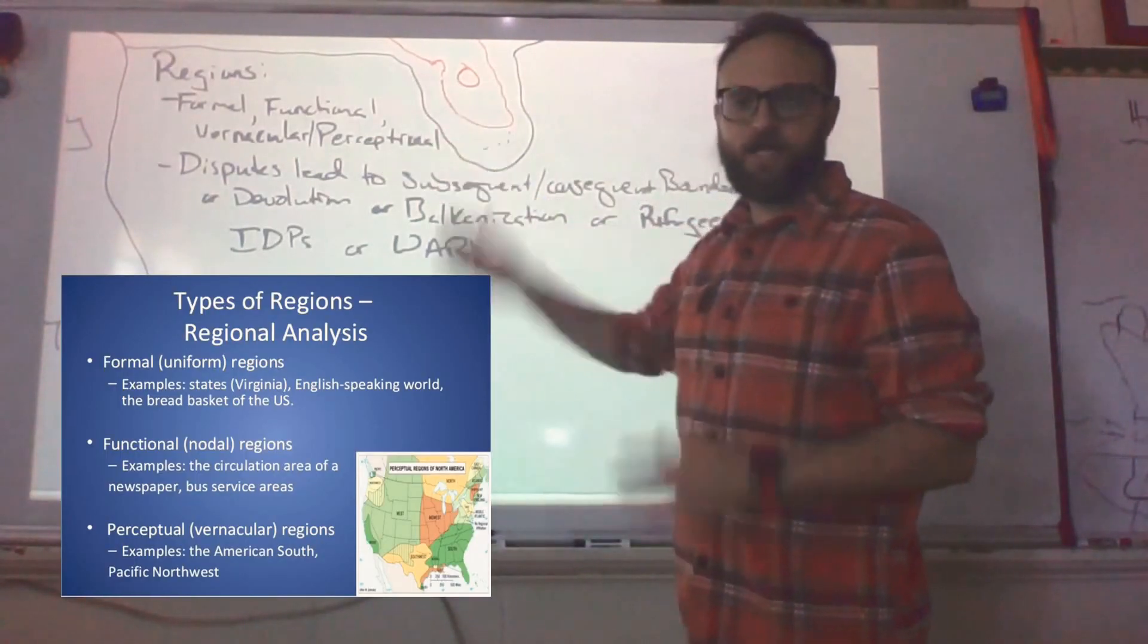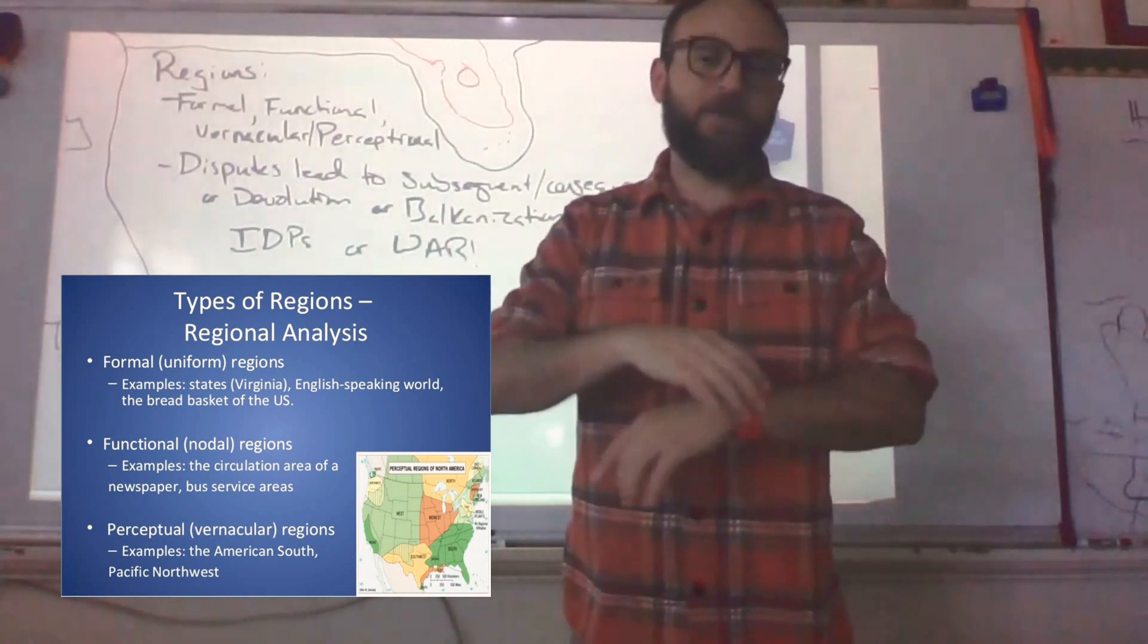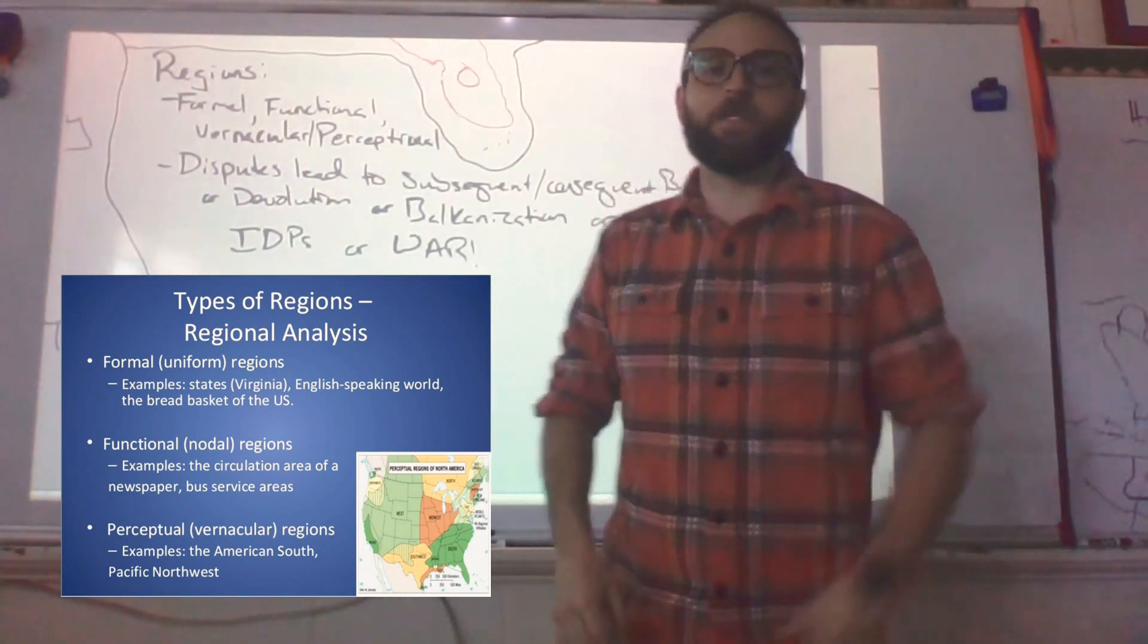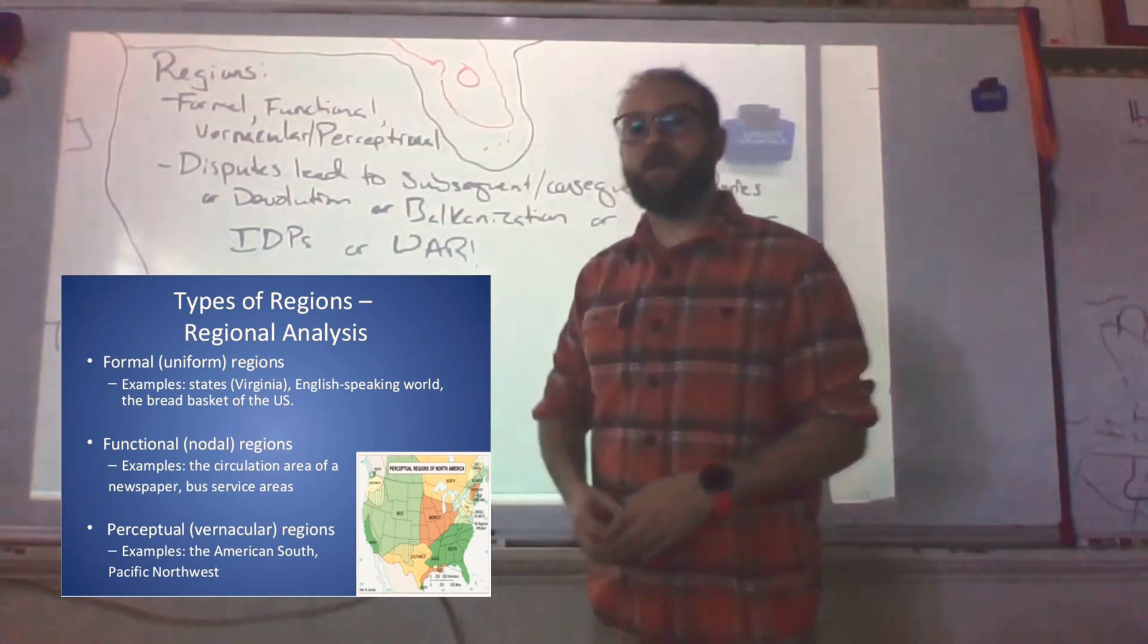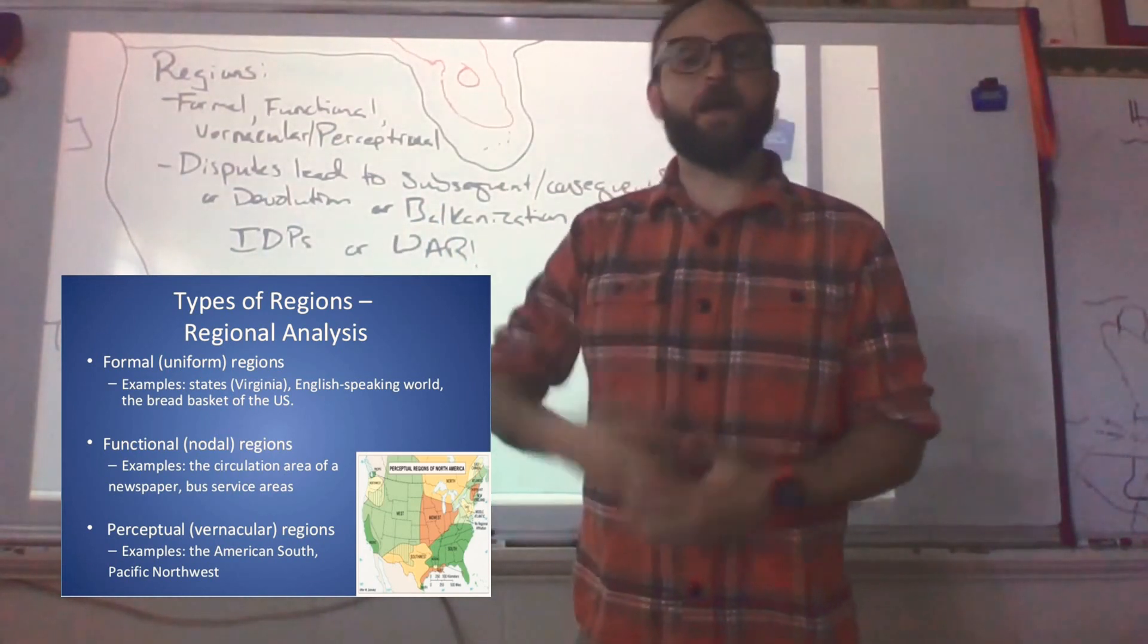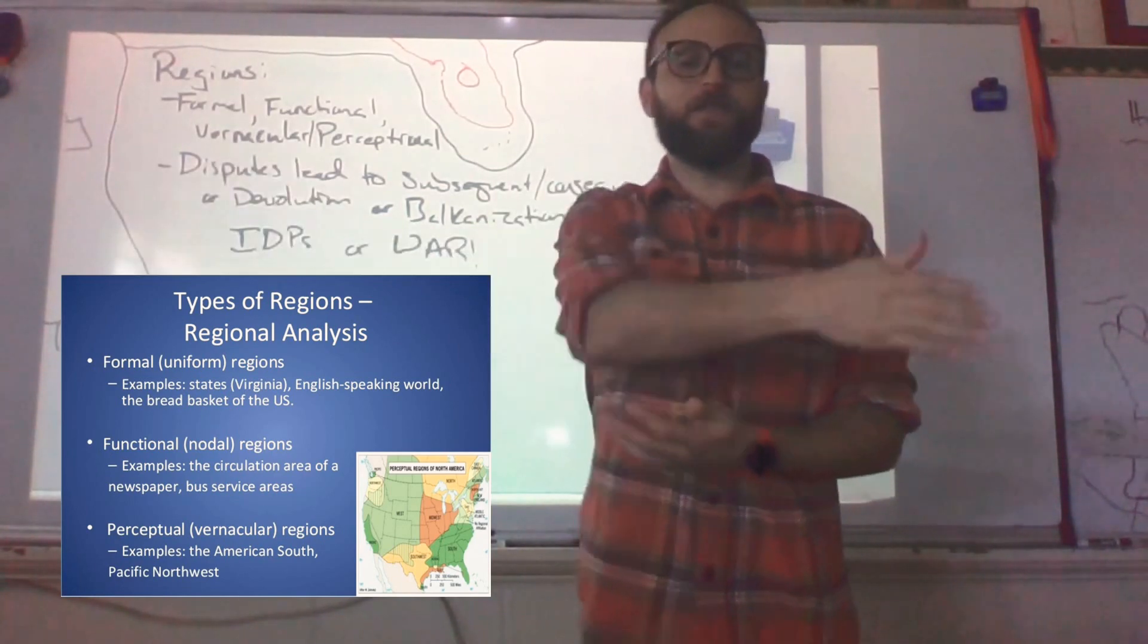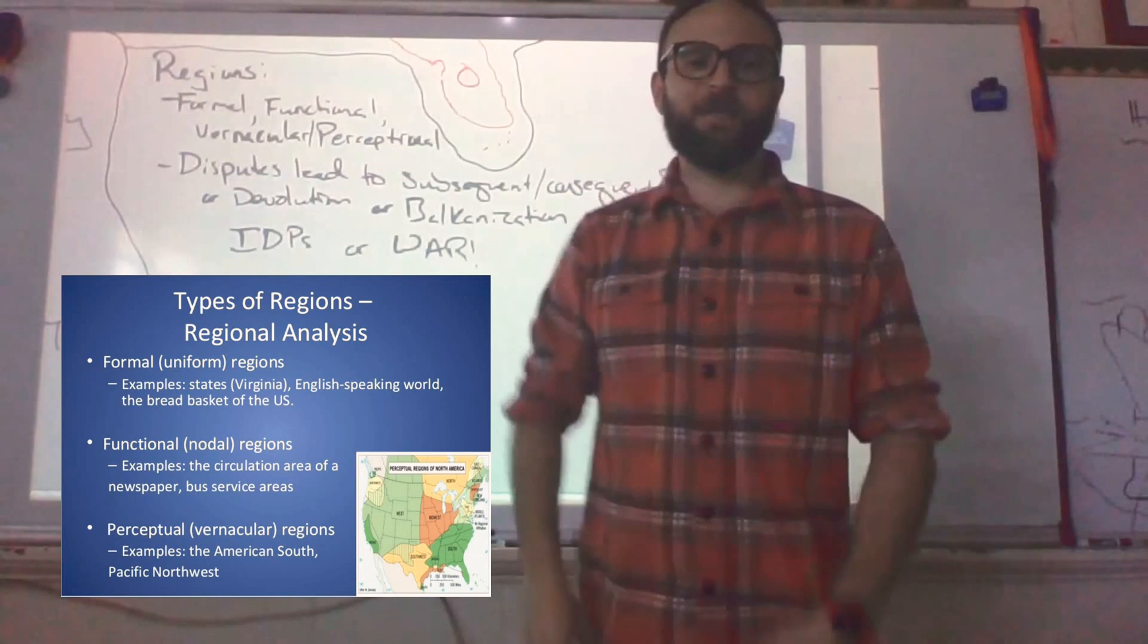The last section of unit one. Formal, functional, vernacular. A formal region would be a political boundary, such as Canada. If it's politically recognized by the UN, it's almost certainly a formal region. Functional would be based on a node or a hearth. So, for example, your Wi-Fi router, your pizza delivery room. If it's limited by the distance or range of this node, you like this motion, then it's going to be a functional region.